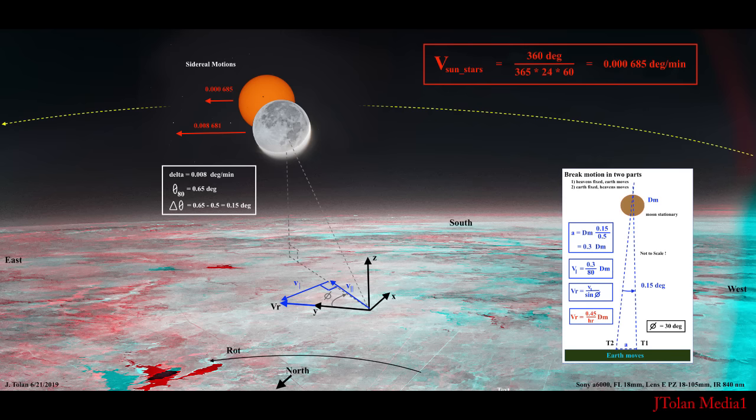Everything moves, but we can break it down like this. Now this is where it gets really exciting. So what I'm drawing here is case one: heavens are fixed and earth moves. We can break down motion like that. So we advance a distance A at the bottom between time one and time two. We've moved. There's an angle, 0.15 degrees.